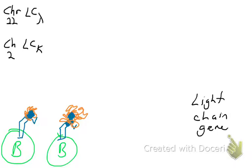We saw the heavy-chain gene was present on chromosome 14. For the light-chain, there are actually two light-chain gene loci. On chromosome 22, there's the light-chain lambda gene locus, and on chromosome 2, there's the light-chain kappa locus. So your B cells have two different light-chain genes to choose from.